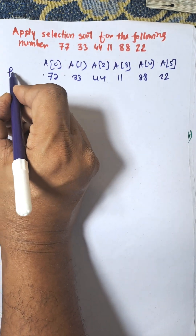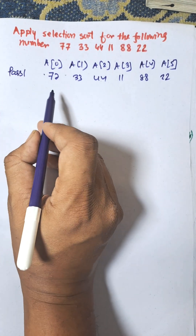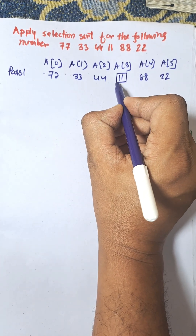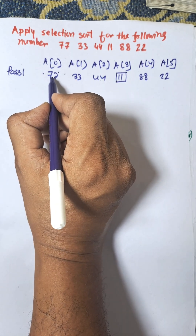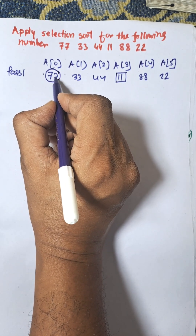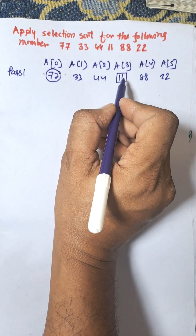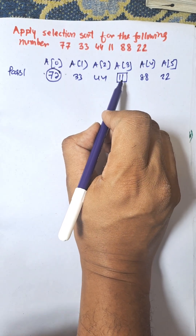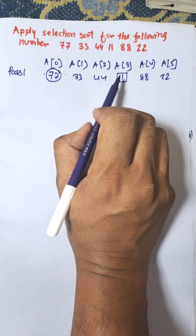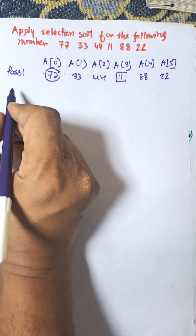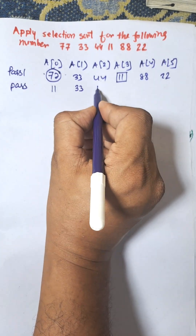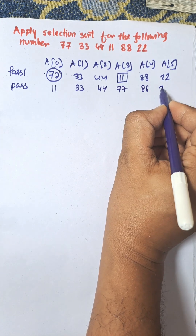Initially, we need to select the smallest number from the list of numbers. Here, 11 is the smallest number. Using the swapping algorithm, 77 and 11 are swapped. So initially the smallest number is searched, then the first position and the smallest number are exchanged. After pass one, the array is: 11, 33, 44, 77, 88, 22.